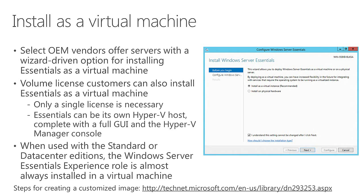One of the things that makes it easy is the ability to extend the configuration wizard for Essentials to ask you at the beginning if you want to install as a virtual instance or directly on physical hardware. This is done by select OEM vendors who custom-create the image to include this step. They've got all of the different settings and configuration information baked into that image. As a volume licensing customer, you can also install Essentials as a virtual machine, but you won't necessarily see this page of the wizard.